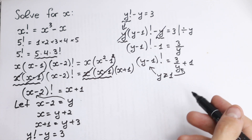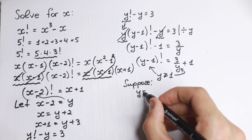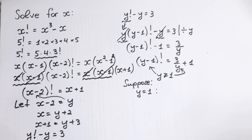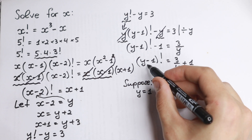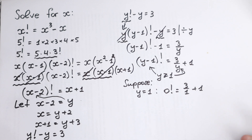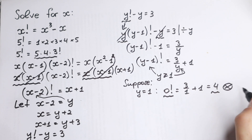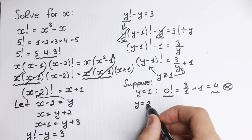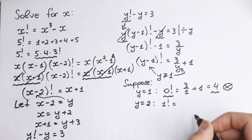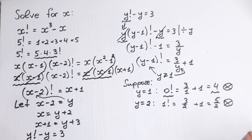Let's check all options. If y equals 1: (0)! equals 3 over 1 plus 1 equals 4 — but 0! equals 1, not 4, so this is wrong. If y equals 2: (1)! equals 3 over 2 plus 1 equals 5/2 — but 1! equals 1, not 5/2, so this is also incorrect.